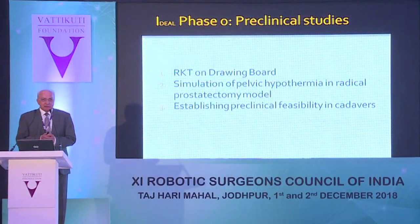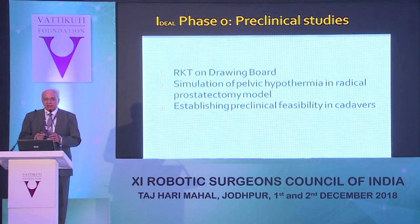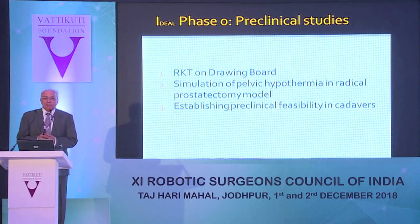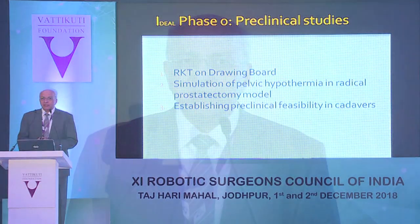Even before the first IDEAL phase, there is a phase zero — pre-clinical work before you start embarking on any use of the procedure in a patient. For robotic transplant, background work was done in three forms: working on the drawing board to think through the approach, simulating pelvic hypothermia because prolonged warm ischemia was believed to be a key problem in prior attempts, and establishing clinical feasibility on cadavers.